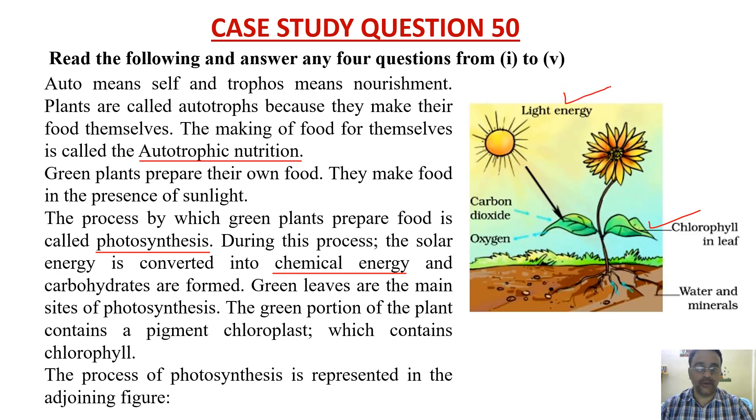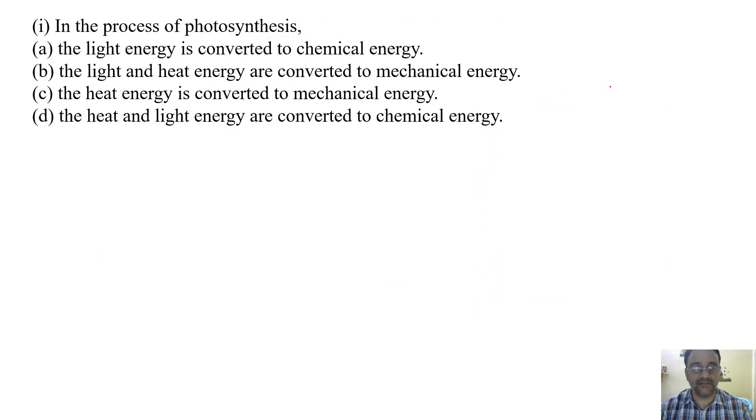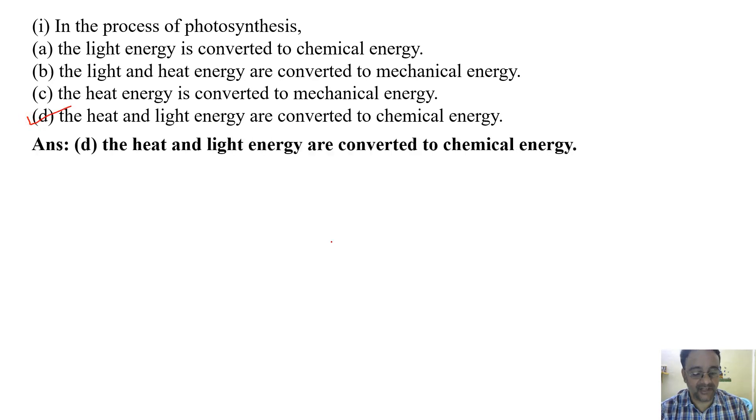The process of photosynthesis is represented in the adjoining figure. Based on this context, some questions have been framed. First question: In the process of photosynthesis - (a) the light energy is converted to chemical energy, (b) the light and heat energy are converted to mechanical energy, (c) the heat energy is converted to mechanical energy, (d) the heat and light energy are converted to chemical energy. The correct answer is option D.